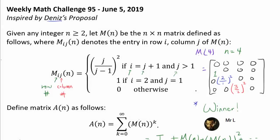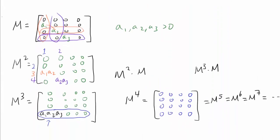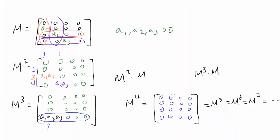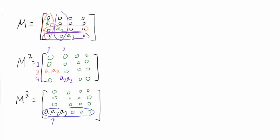Inside the definition of A of N, M of N to the Nth power is actually the zero matrix, and all higher powers are zero as well. So instead of summing from 0 to infinity, we are really summing from 0 to N minus 1, which means A of N is well-defined. The non-zero entries move diagonally: in M, entries satisfy i equals j plus 1; in M squared, i equals j plus 2; in M cubed, i equals j plus 3.